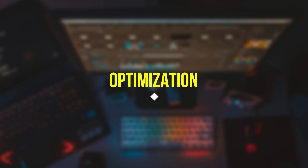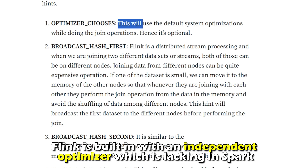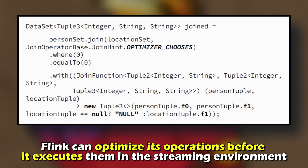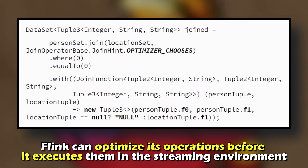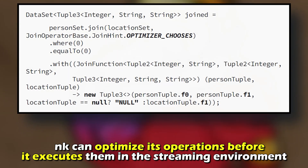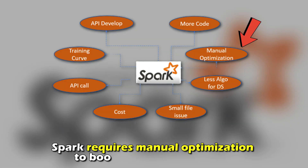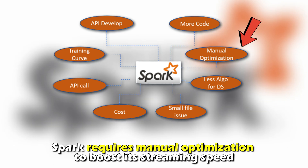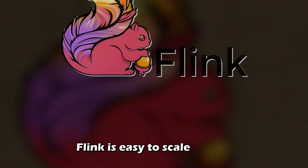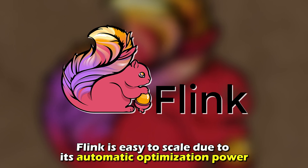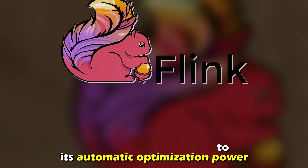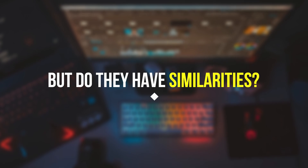Optimization: Flink is built with an independent optimizer, which is lacking in Spark. Due to this, Flink can optimize its operations before it executes them in the streaming environment. On the other hand, Spark requires manual optimization to boost its streaming speed. Therefore, Flink is easy to scale due to its automatic optimization power.